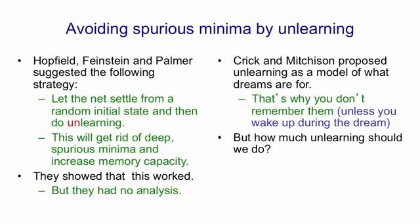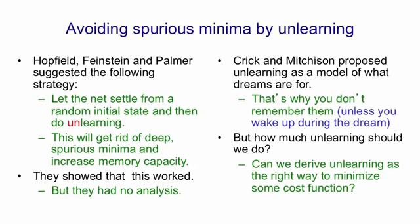But there's another problem with unlearning, which is a more mathematical problem: how much unlearning should we do? A real solution to that problem would be to show that unlearning is part of the process of fitting a model to data, and if you do maximum likelihood fitting of that model then unlearning will automatically come out of fitting the model, and what's more you'll know exactly how much unlearning to do. So what we're going to try and do is derive unlearning as the right way to minimise a cost function, where the cost function is how well your neural net models the data that you saw during the day.